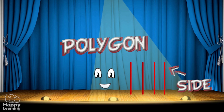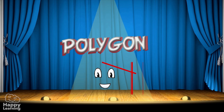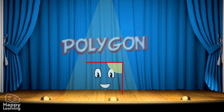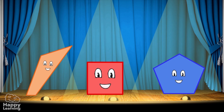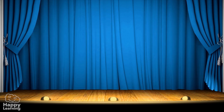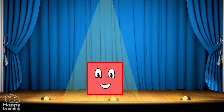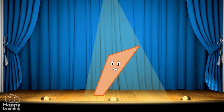A polygon is made of several elements. The side is each one of the segments that form the polygon. The vertex is the point where two sides meet — a corner. And the angle is the space formed between two sides that meet at a point. There are many kinds of polygons, so we classify them in different ways.